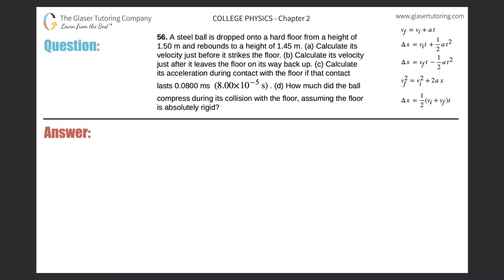Number 56. A steel ball is dropped onto a hard floor from a height of 1.5 meters and rebounds to a height of 1.45 meters. Calculate its velocity just before it strikes the floor. So we have a ball and it falls down — it's just dropped — so we know its initial velocity is zero, and it falls a total of 1.50 meters until it hits the floor.